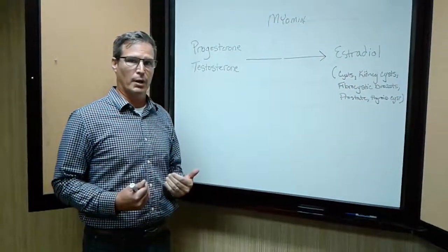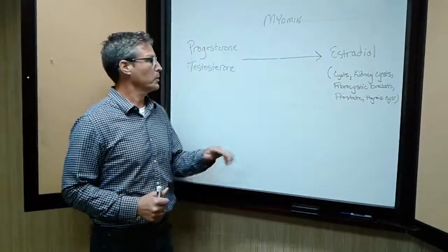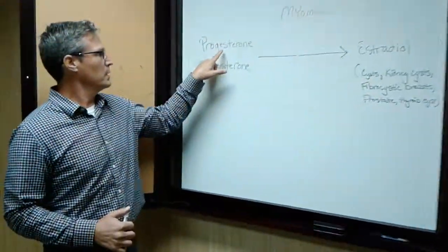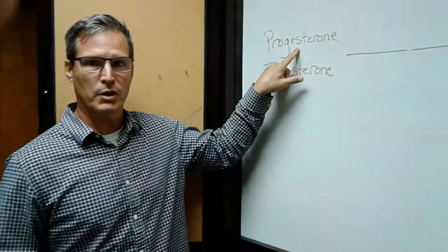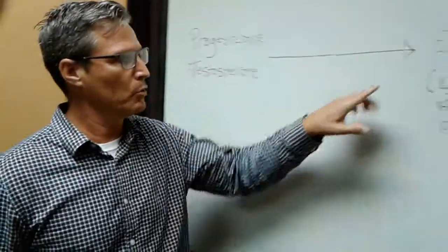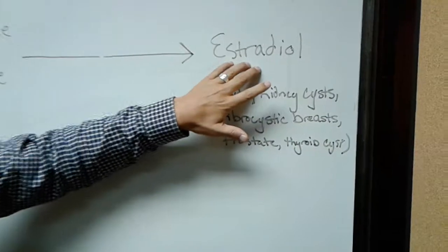So what's happening in our bodies because of all the different things we're exposed to is that we begin to convert our natural progesterone and testosterone into a very potent form of estrogen called estradiol.